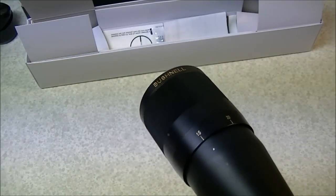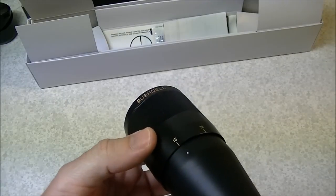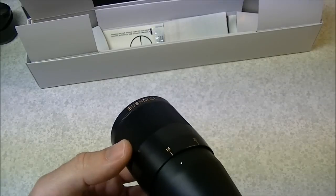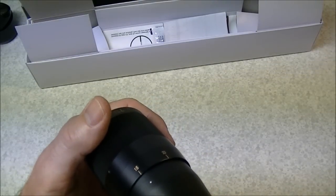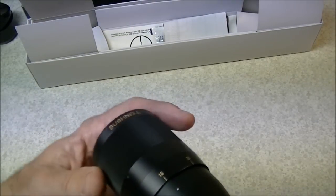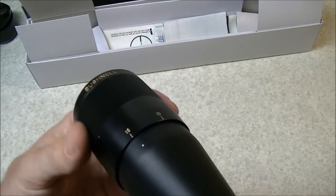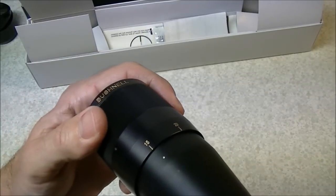You can see if you've got parallax error if you're behind a scope and you have the rifle rested very steadily, and if you can move your head side to side and you can see that the image moves relative to the crosshairs that means you've got parallax. When your scope is adjusted to eliminate parallax there is no apparent image movement compared to the crosshairs at any given distance.